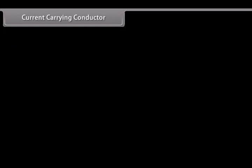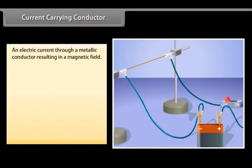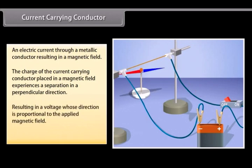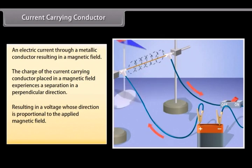An electric current passing through a metallic conductor results in a magnetic field being created around it. The charge of the current-carrying conductor placed in a magnetic field experiences a separation in a direction that is perpendicular to the current and the magnetic field. This results in a voltage whose direction is proportional to the applied magnetic field. This effect can also be reversed.